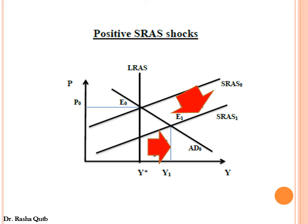Starting from point E-zero — the intersection of the aggregate demand curve and SRAS curve where the economy experiences no gap and is producing at the potential level of output Y-star — we begin with a reduction in wages. The cost of production decreases, so SRAS shifts rightward from SRAS-zero to SRAS-1. Moving from E-zero to E-1 opens an inflationary gap because the level of output is above the potential level of output.